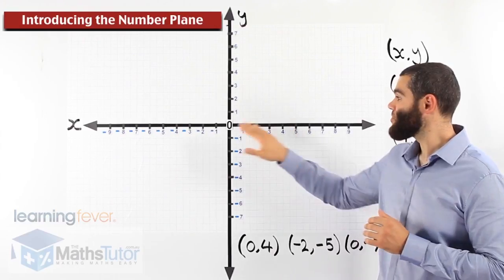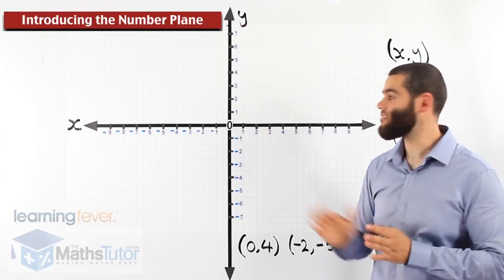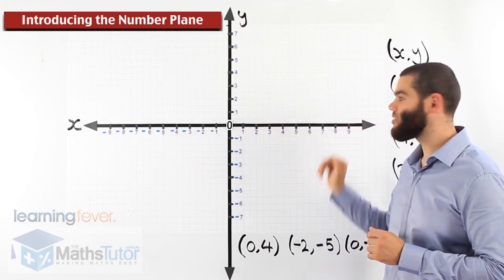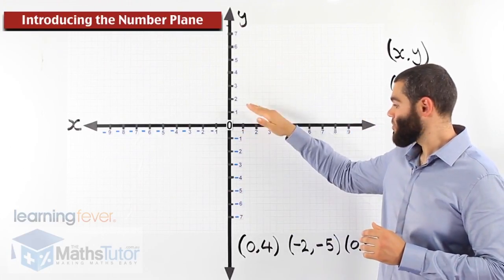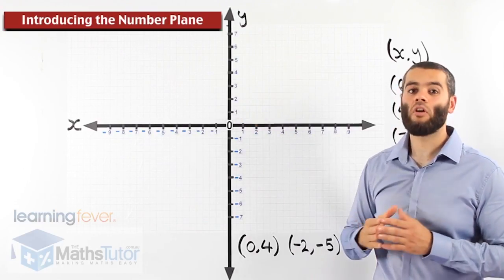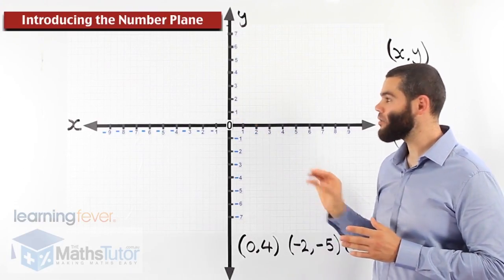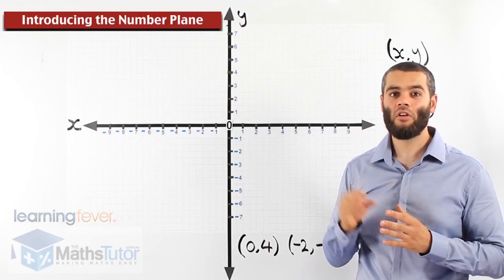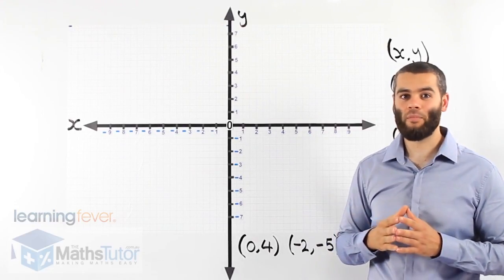This number plane, as you can see, the x-axis is divided into two parts — we have the negatives and we have the positives. The y-axis has negatives on the bottom and positives on top. Now we're going to use it and I'm going to show you how to plot points and coordinates on this number plane.